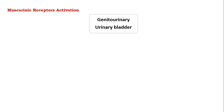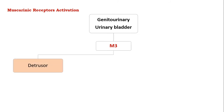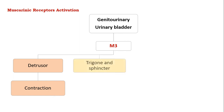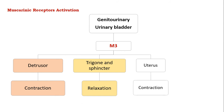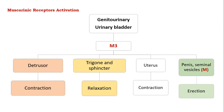Coming to the genitourinary system — that is the effects on the urinary bladder — it is mediated by M3 receptor activation. In the detrusor muscle, it leads to contraction. In the trigone and sphincter, it causes relaxation. On the uterus, it leads to contraction of the uterine smooth muscles, and in the penis and seminal vesicles, it helps in erection.